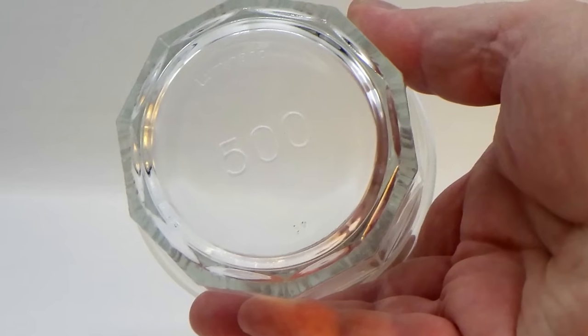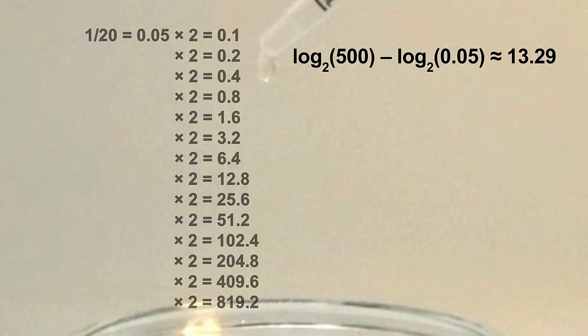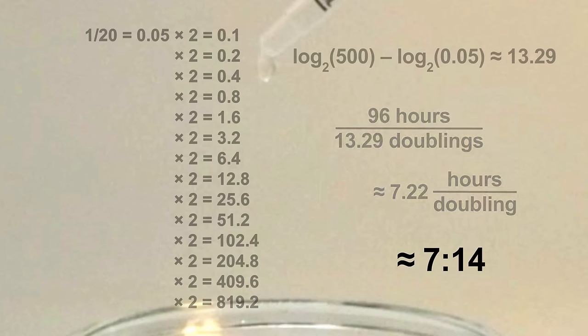Here we used a 500 milliliter container and started with just a drop, or about 1/20th of a milliliter. A little arithmetic shows us that the original drop had to double a little more than 13 times to reach the top and begin to spill over the side. Since four days is 96 hours, we see that it was doubling at a rate of once every 7 hours and 14 minutes or so.